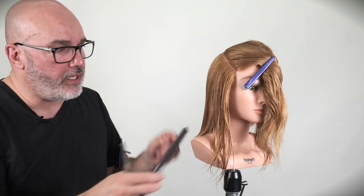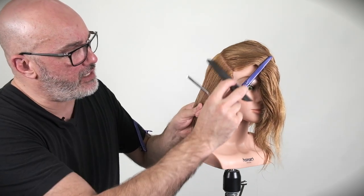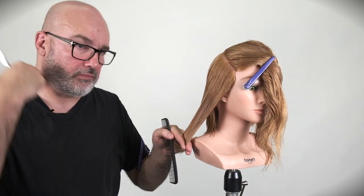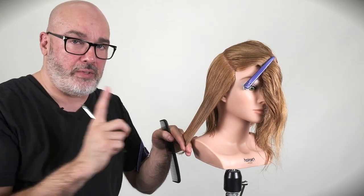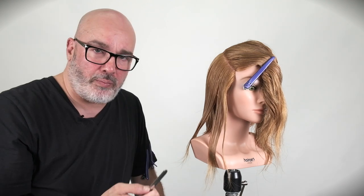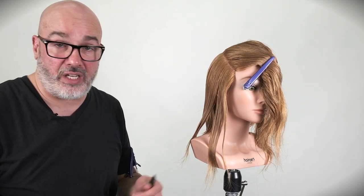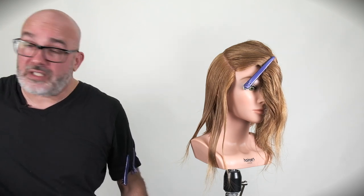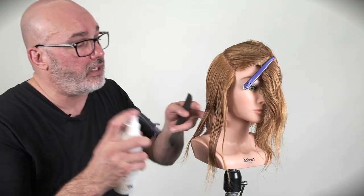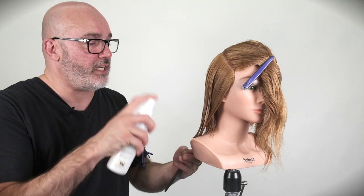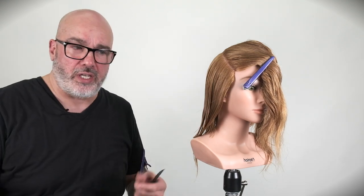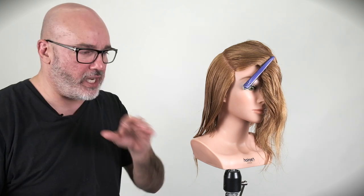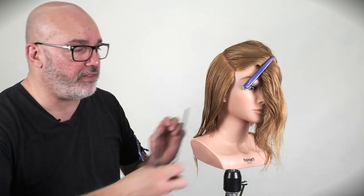Now, I find that if I have to fight the section, my blade is either too dull or I'm using too thick of a section. So sometimes I'll replace the blade every haircut. Other times, halfway through the haircut, depending upon how fierce the hair is. Sometimes the hair is so fierce, it wants to fight you every section. And that's usually when the hair is coarse and it has a lot of cuticle that you have to cut through. Each individual hair is large in diameter. The razor will dull faster.